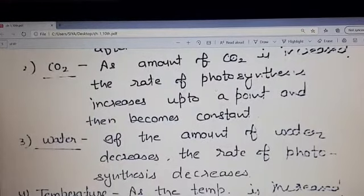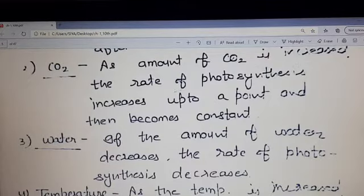As the amount of carbon dioxide increases, the rate of photosynthesis increases up to a point and then becomes constant.